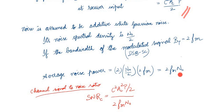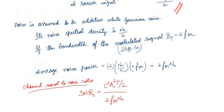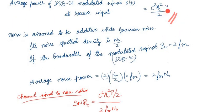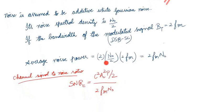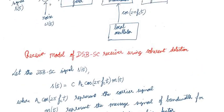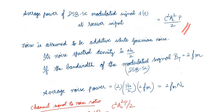The channel signal-to-noise ratio is the ratio of signal power to noise power. The signal power is c²Ac²P/2 and the noise power is 2fm·N₀. Therefore, the channel SNR — measured at the receiver input — is c²Ac²P / (4fm·N₀). That is the channel signal-to-noise ratio.